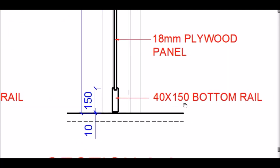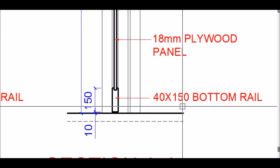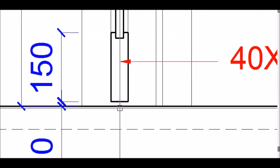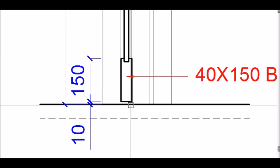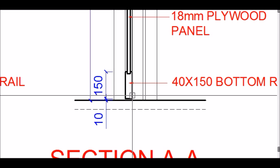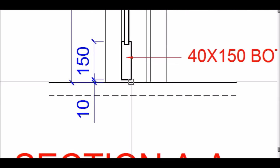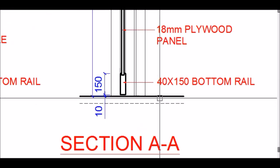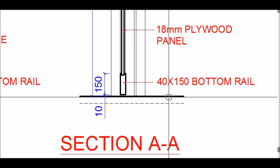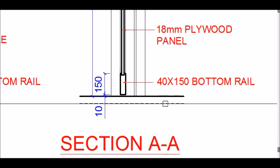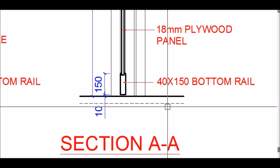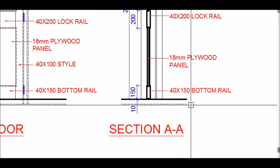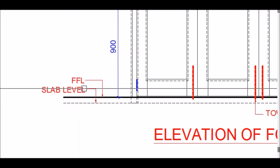At the bottom is the bottom rail, also 40 by 150mm. An important detail is that the bottom rail is lifted 10mm above the finished floor level so the door does not rub on the floor when it deflects or droops. In the section, two lines are shown: the thick line is the finished floor level and the dotted line below is the RCC slab level, with screed and flooring material between them.